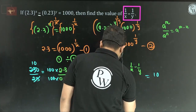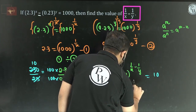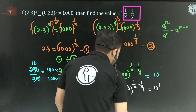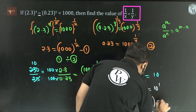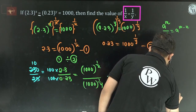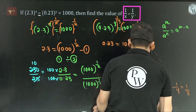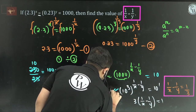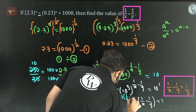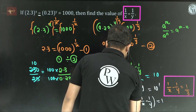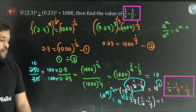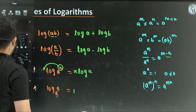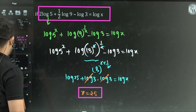So 10 to the power of 1 by x minus 1 by y equals 10 to the power of 1. Actually, 1000 divided by 1000 equals 1, so we get 10 to the power of 3 times 1 by x minus 1 by y equals 10 to the power of 1. Bases equal, so 3 times 1 by x minus 1 by y equals 1, giving 1 by x minus 1 by y equals 1 by 3. These are the model questions discussed — product, quotient, and power rules applied.